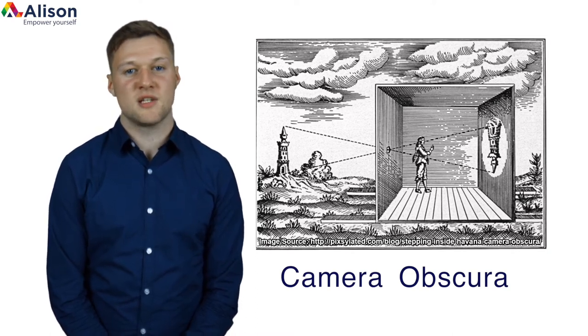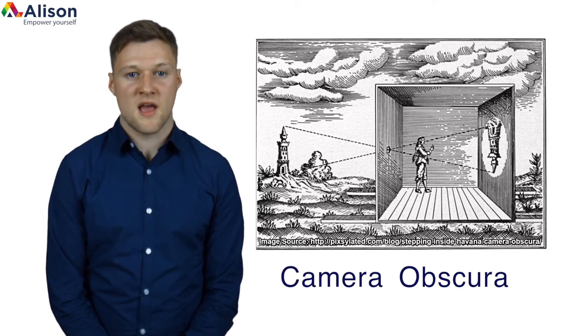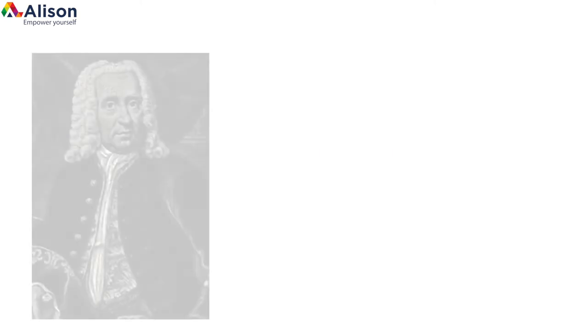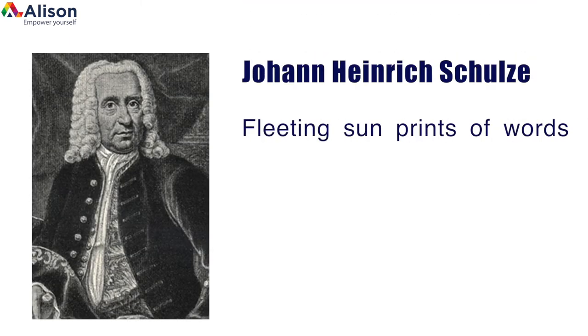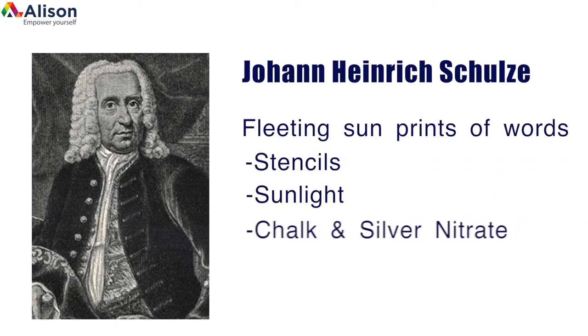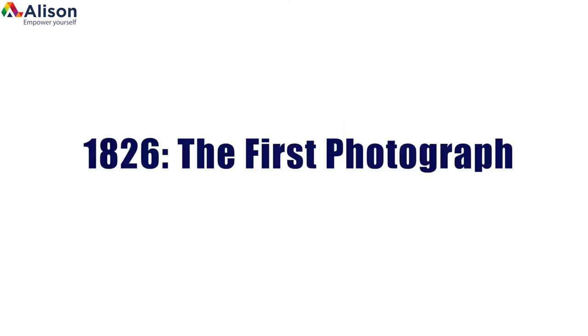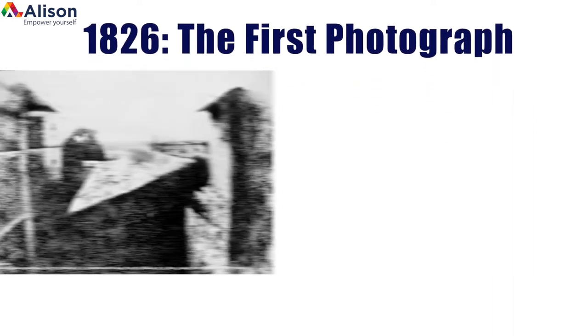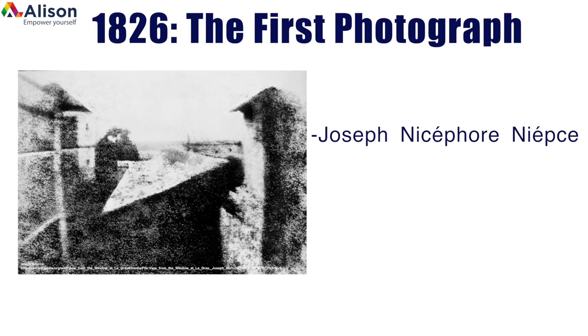This discovery eventually led to the creation of modern eyeglasses and laser beams. It all really started with the first image recorded in 1717, when Johann Heinrich Schultz recorded fleeting sun prints of words using stencils, sunlight, and a bottle mixture of chalk and silver nitrate — essentially an experimental demonstration that the mixture darkens when exposed to light. In 1826, the world's first photograph was taken by Joseph Niépce in France using a procedure called heliography.